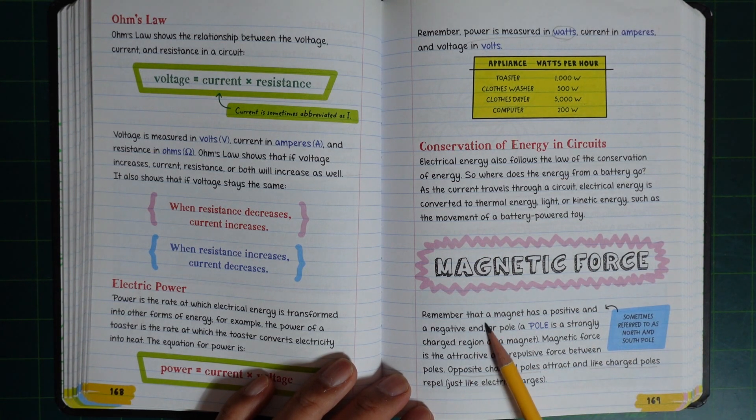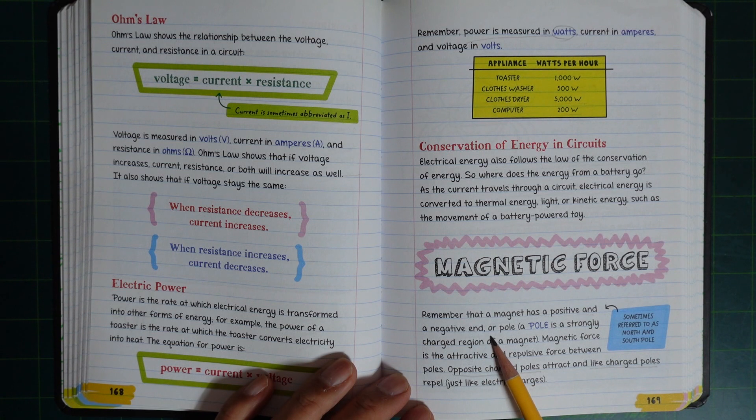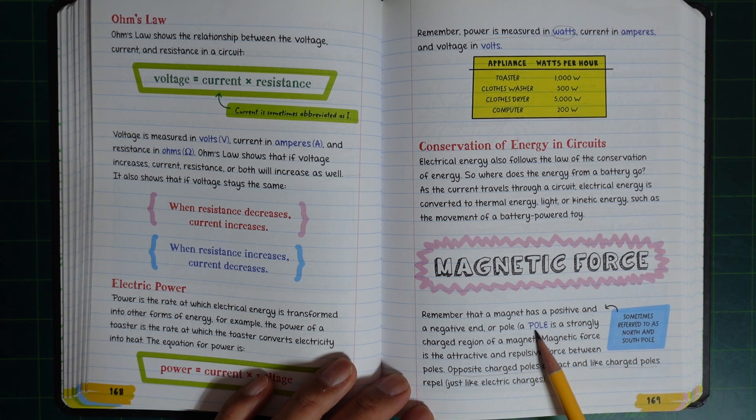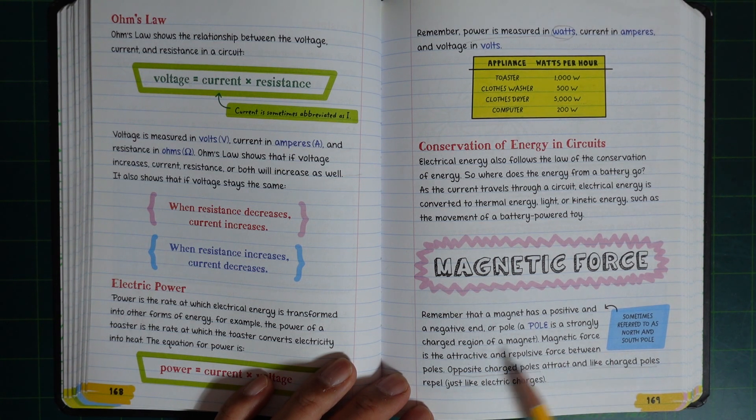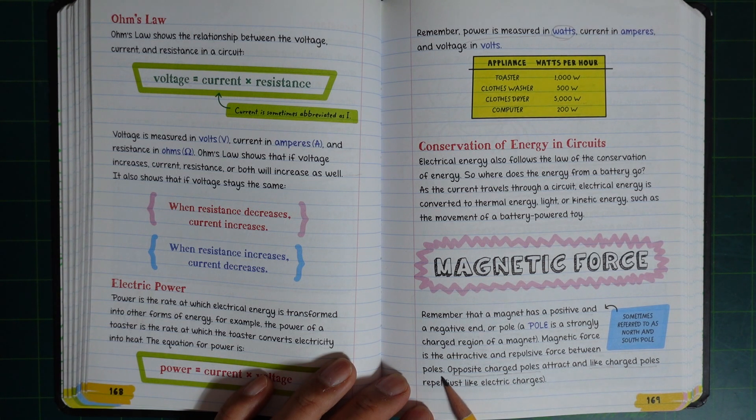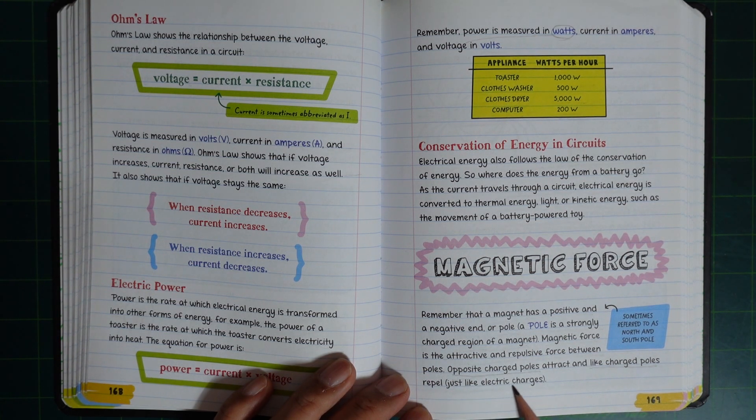Remember that a magnet has a positive and a negative end, or a pole. A pole is a strongly charged region of a magnet. Magnetic force is the attractive and repulsive force between poles. Oppositely charged poles attract, and like charged poles repel, just like electric charges.